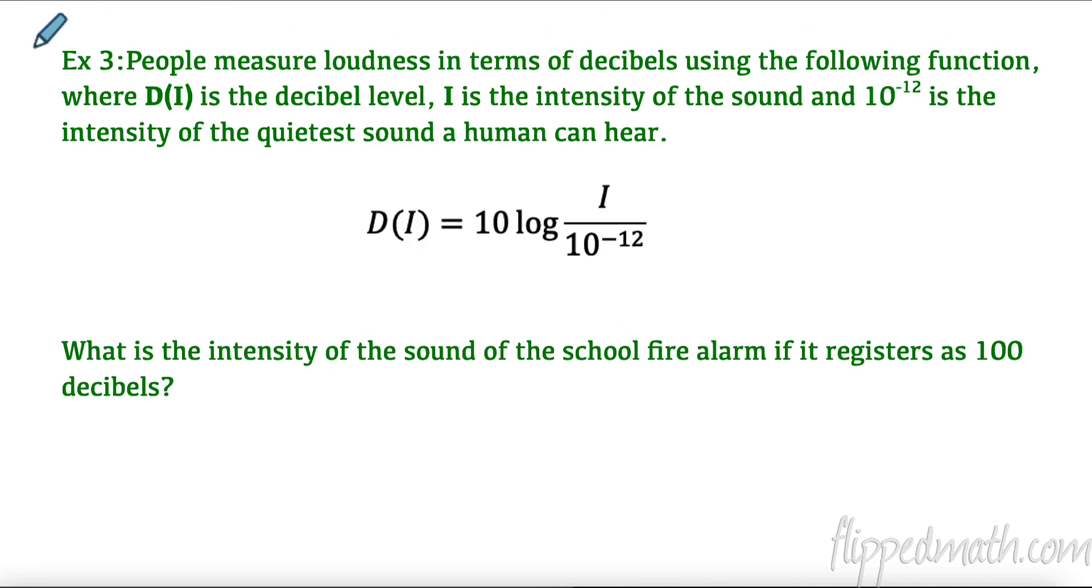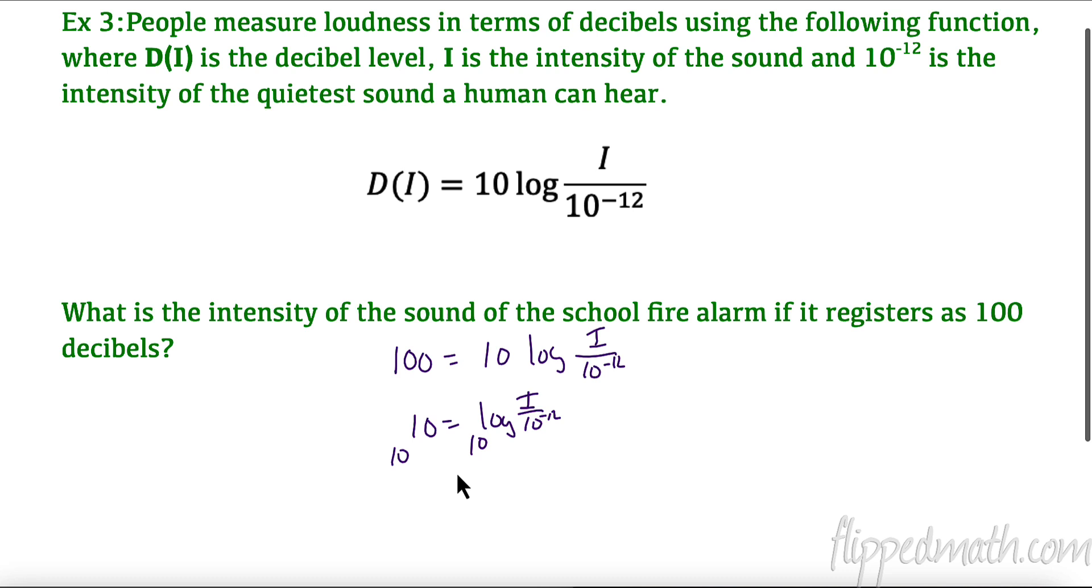Down here we have a situation where we are talking about decibels and the intensity of sounds. People measure loudness in terms of decibels. Using the following function where D(i) is the decibel level, i is the intensity of the sound, and this right here 10 to the -12 is the quietest sound a human can hear. So this is the formula here which says what is the intensity of the sound of a school fire alarm if it registers as 100 decibels? So D(i) is going to be 100 and it's going to equal 10 log of i, the intensity of this sound, over 10 to the -12. To solve this I'm going to divide by 10, so 100 divided by 10 is 10 = log of i over 10 to the -12.